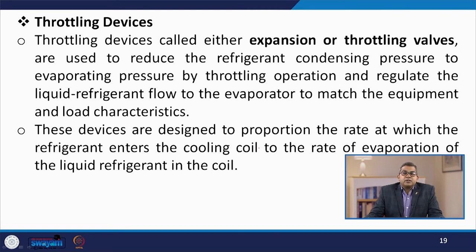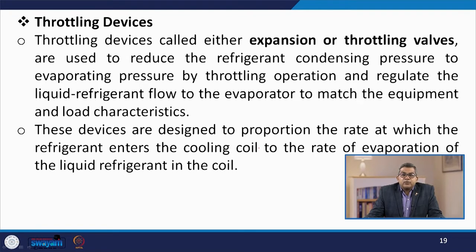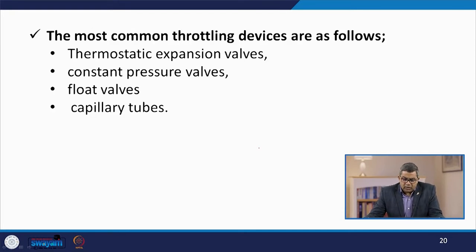Let us talk about the throttling device. Throttling devices are an integral part of any refrigeration system and are called either expansion or throttling valves. They are used to reduce the refrigerant condensing pressure to evaporating pressure by throttling operation and regulate the liquid refrigerant flow to the evaporator to match the equipment and load characteristics. These devices proportion the rate at which refrigerant enters the cooling coil to the rate of evaporation of liquid refrigerant in the coil. The most common throttling devices are thermostatic expansion valves, constant pressure valves, throat valves, and capillary tubes.